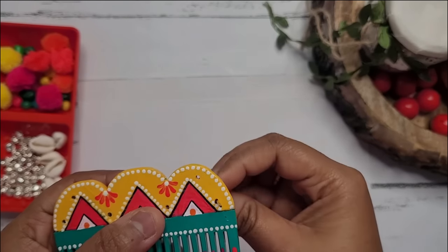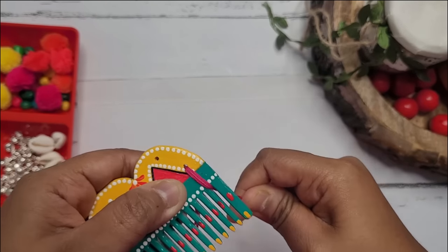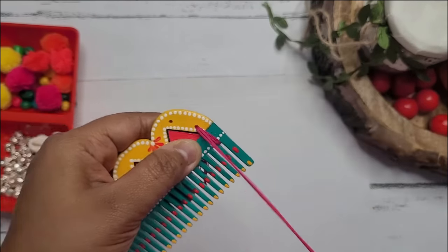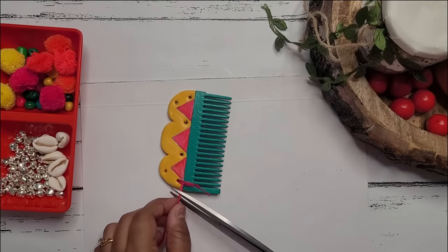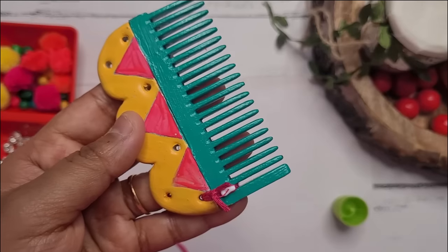Now stitching the clay and the comb part together, tying a knot on the back side of the comb and applying some glue to secure it properly.